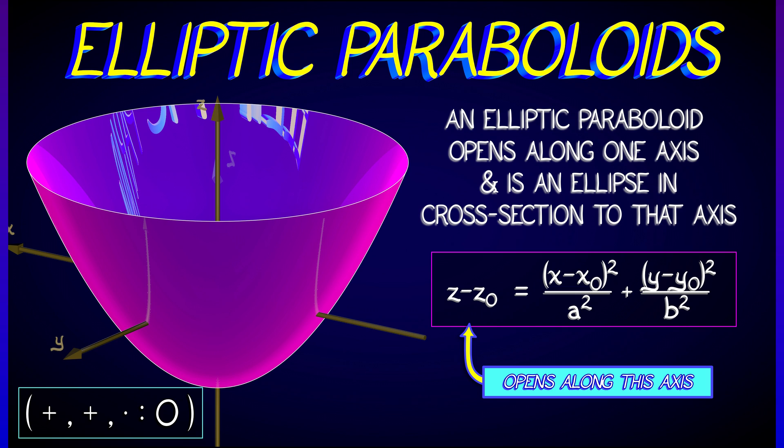Now, elliptic paraboloids look like ellipses when you cut perpendicular to, in this case, the z-axis.